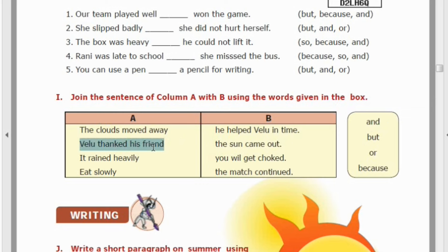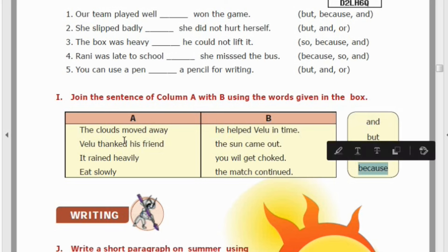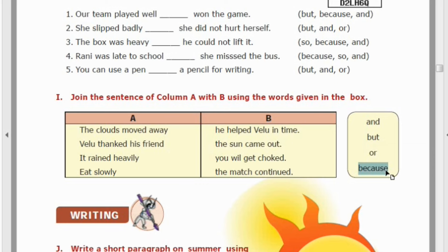Next: 'Velu thanked his friend ___ he helped Velu in time.' Velu thanked his friend — why? Because there is a reason: he helped Velu in time. So we use 'because' to convey the reason. 'Velu thanked his friend because he helped him in time.'